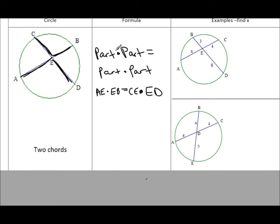OK? So this is the formula, and we'll try it out on the first example. In all of these examples, we're going to be finding X. So we do the same thing. Part times part. So we can start with 3 times 8 equals part X times its corresponding part, 4. Multiply everything out. 3 times 8 is 24, and 4 times X is just 4X. Divide both sides by 4, so X is 6.